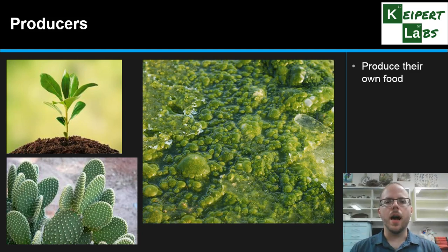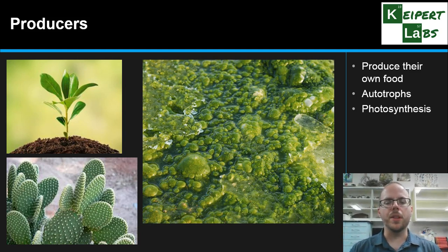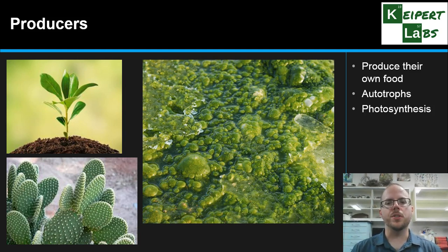Plants are able to produce their own food from their surroundings, so we give them the scientific name of autotroph. 'Auto' meaning self and 'troph' referring to feeding or eating — so self-feeding. We're typically looking at plants undergoing the process of photosynthesis: 'photo' referring to light and 'synthesis' meaning building, so they build using light. In photosynthesis, plants combine carbon dioxide and water from their environment, using energy from the sun to produce glucose and oxygen.